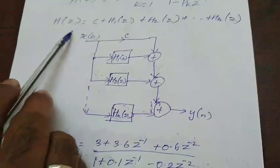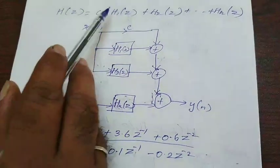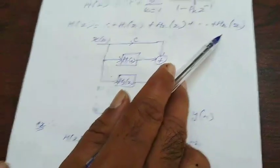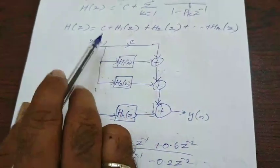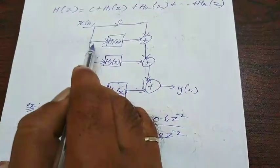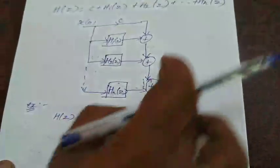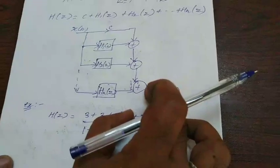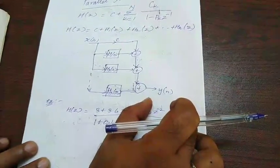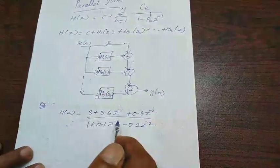Therefore your h of z is written like this: c that is a constant, then h1 of z plus h2 of z likewise up to hn of z. This will be implemented like this, this constant is coming again, again h1 of z, h2 of z, everything is connected in a parallel manner, then they are combined together and producing the required output y of n. This kind of realization is called as parallel form realization.